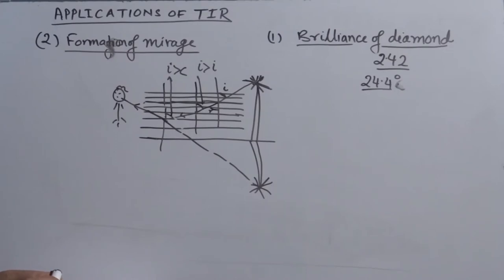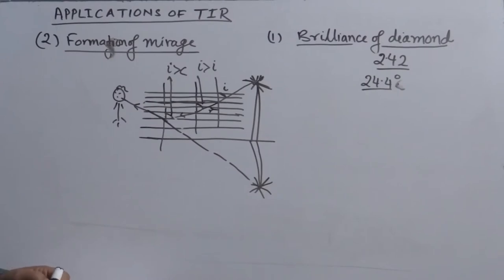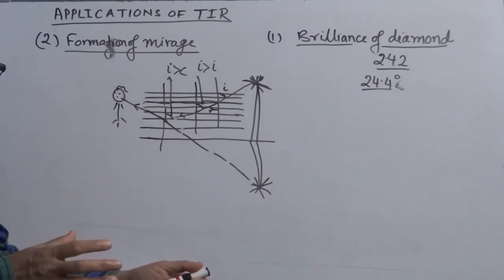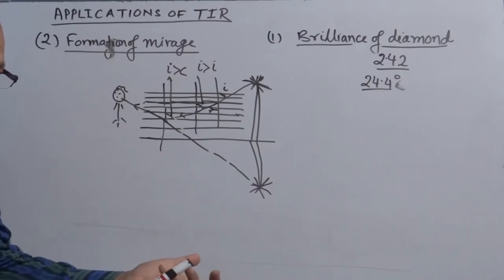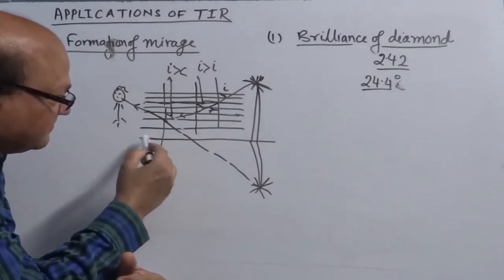People spend thousands and lakhs of rupees purchasing diamonds as a social symbol. The second important application is the formation of a mirage. In hot summer days in desert areas, we see what appears to be water at a certain distance. This effect can also be observed on tar roads in metropolitan cities. What actually happens on hot summer days?